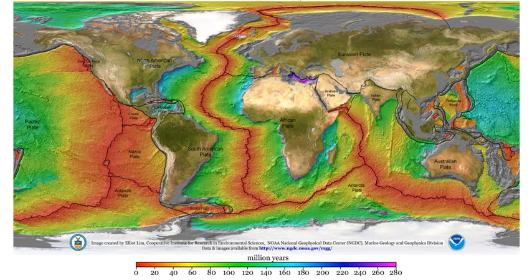The Earth is roughly spherical, but it bulges towards the equator, so it is roughly in the shape of an ellipsoid. This bulge is due to its rotation and is nearly consistent with an Earth in hydrostatic equilibrium. The detailed shape of the Earth, however, is also affected by the distribution of continents and ocean basins, and to some extent by the dynamics of the plates.